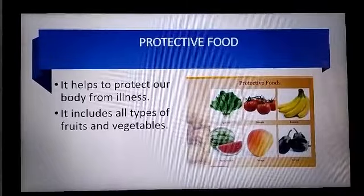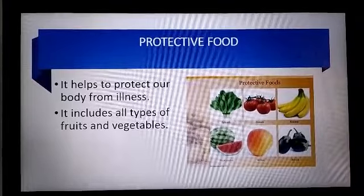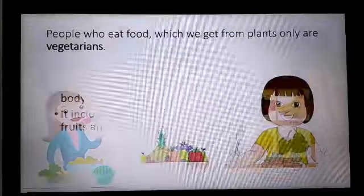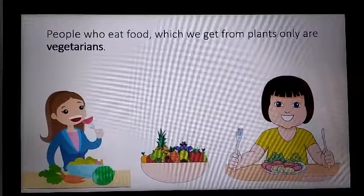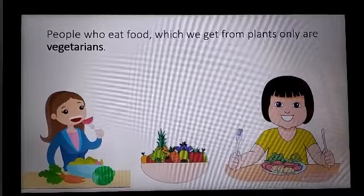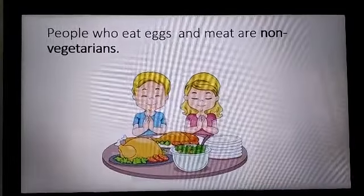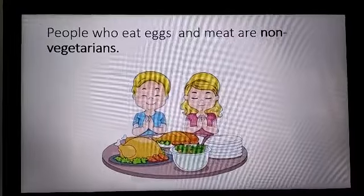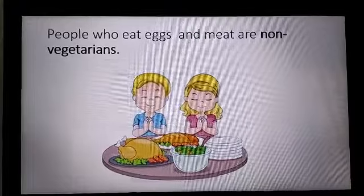So we have seen the three kinds of food: energy-giving food, bodybuilding food, and protective food. Now, do you know some people only eat food that we get from plants — like fruits, vegetables, and food grains? Such people are known as vegetarians. Whereas people who eat food from both plants and animals — that is egg, meat, and fish — are called non-vegetarians.